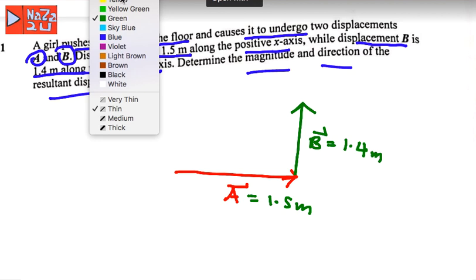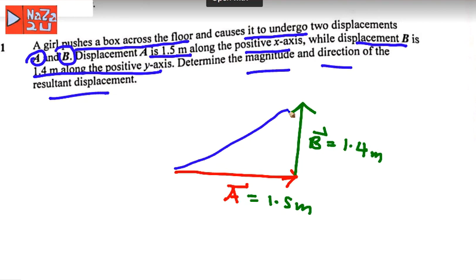You can use the diagram here. So this is the diagram resultant, or this is vector R. This is a triangle here.